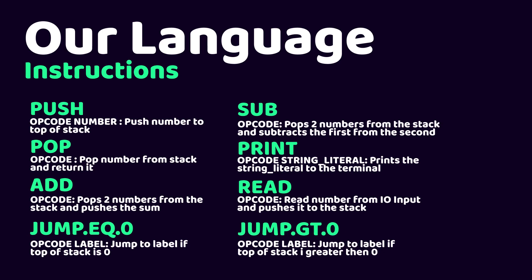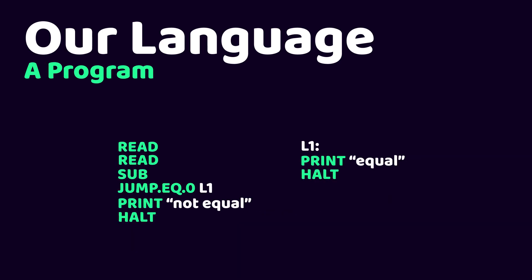Let's look at two example programs. The first checks whether two numbers are equal. We ask two numbers from the user, then use the sub instruction to subtract them. We then use the jump-when-equal-to-0 instruction with label l1 to check whether the top of the stack is 0. When it's not equal to 0, we print 'not equal' and halt. If it is equal to 0, we jump to l1, print 'equal', and halt.